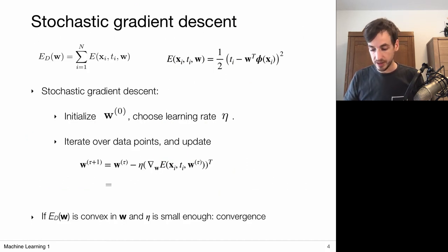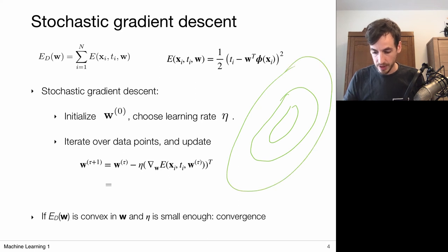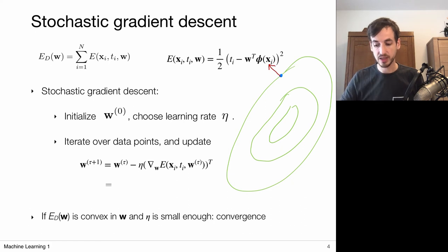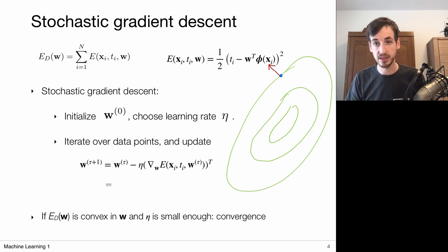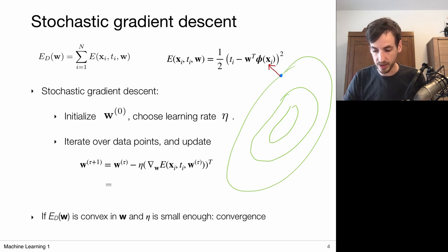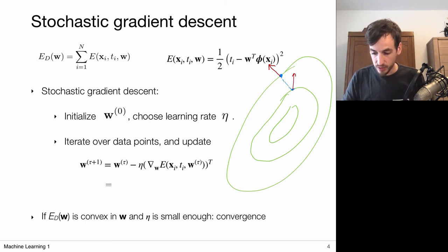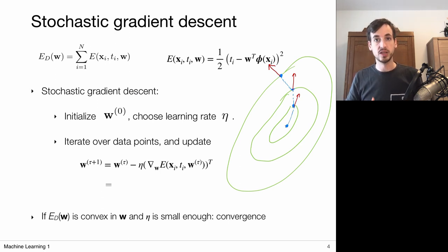So what we're going to do is gradient descent. Given this error landscape, we start at some initial point. The gradient points in the direction of steepest ascent, and inversely, the direction of steepest descent. We follow the negative gradient direction to move downhill to the next point, then compute the gradient there and move downhill again, continuing until we reach the lowest point in the landscape.